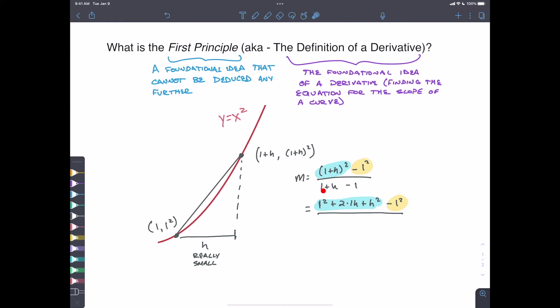And all of that is going to be over, well, one plus h minus one, one minus one. So we're left with just h in the denominator.